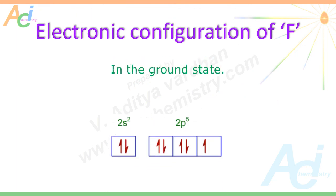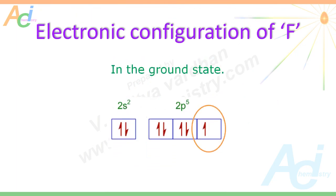Now let us see the electronic configuration of fluorine. In the ground state, the outer electronic configuration can be written as 2s2, 2p5. You can clearly see there is one unpaired electron. Every atom requires one unpaired electron to form a normal covalent bond.